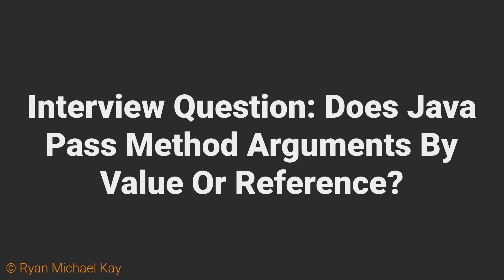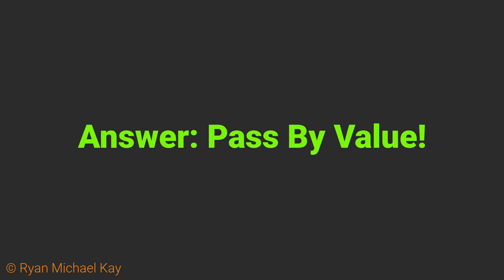A common interview question for Java developers is: does Java pass method arguments by value or reference? It is important to understand that even using the word 'reference' here confuses the issue. If you just look at the code itself without knowing what goes on under the hood, it is reasonable to assume that we are passing references between methods. However, the correct answer is that Java passes arguments of any type by value.